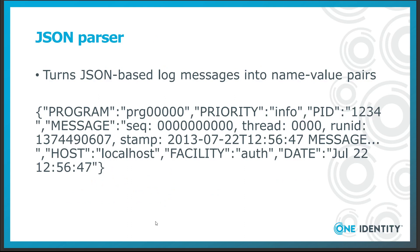The JSON parser turns JSON-based log messages into name-value pairs. JSON is a structured log format; however, all incoming log messages are treated by syslog.ng as plain text. You have to instruct syslog.ng to use a parser and turn the message into name-value pairs.